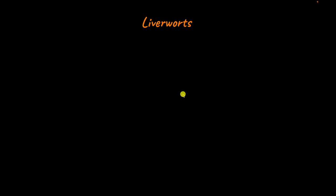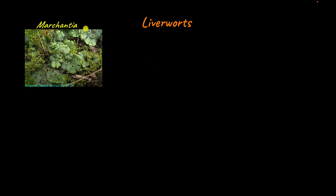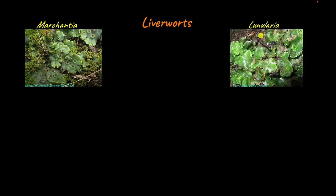Let's first take a closer look at liverworts. Examples of liverworts include Marchantia and Lunularia. Liverworts have a mostly flattened and broad thallus that grows quite close to the surface, as you can see in these examples — the thallus is quite broad and flat and it is growing close to the surface.